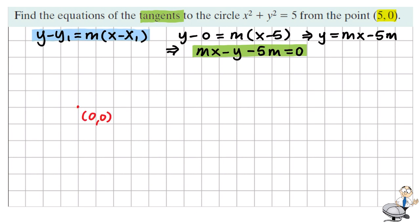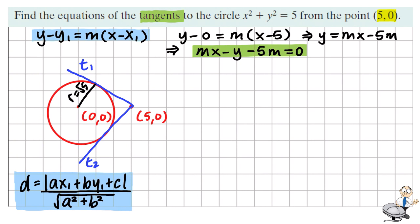Let me draw a little sketch. So we have a center zero zero with a point five zero and we have a circle with a radius root five. Maybe it looks something like this and we have tangents coming from five zero to the circle. I'll call it t1 and t2. So we're looking for the equations of these.